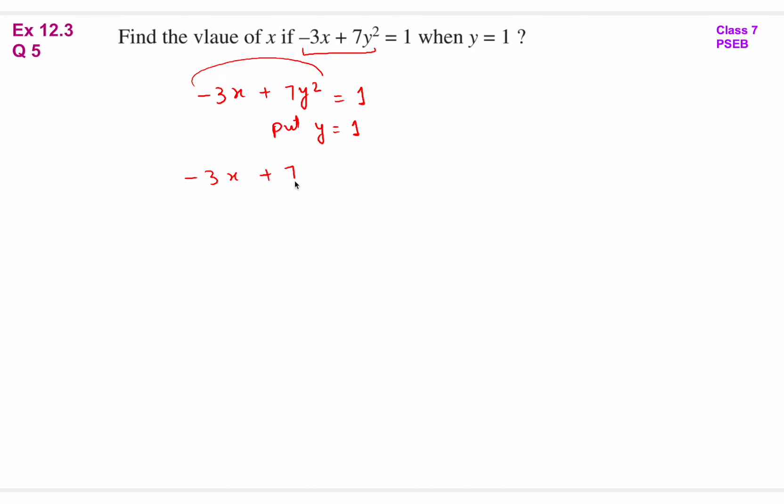So -3x + 7 × 1² = 1. So -3x + 7 × 1 = 1. 1² is 1, 7 × 1 is 7. So -3x + 7 = 1.